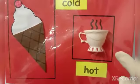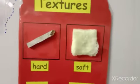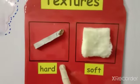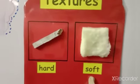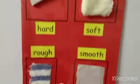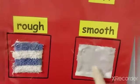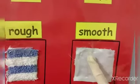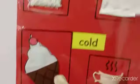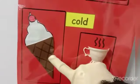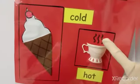Now let's repeat the textures: Hot. Soft. Rough. Smooth. Cold. Hot.